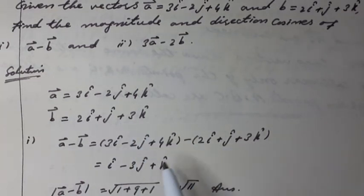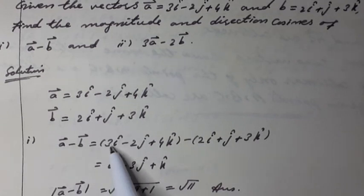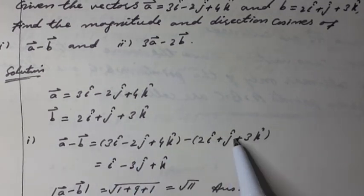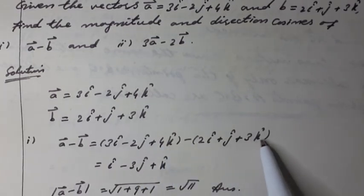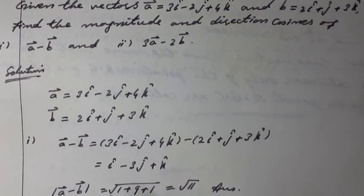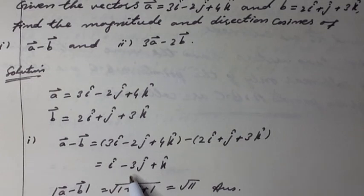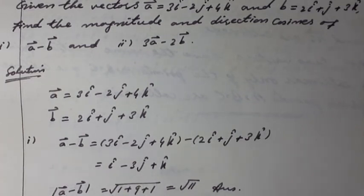After subtracting we have: (3 minus 2)i unit vector minus (2 minus 1 minus 3... wait, minus 3)j unit vector plus (4k unit vector minus 3k unit vector) equal to i unit vector minus 3j unit vector plus k unit vector. The magnitude of a vector minus b vector is equal to √(1² + (−3)² + 1²) = √(1 + 9 + 1) = √11. Answer.